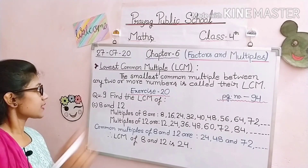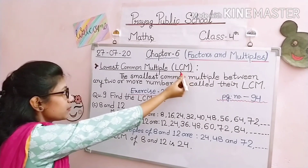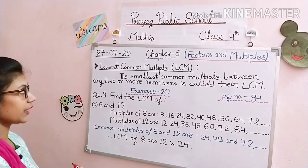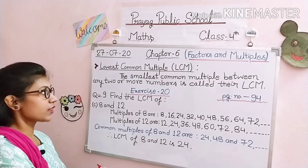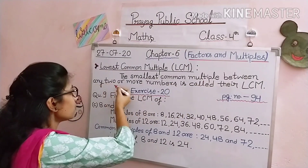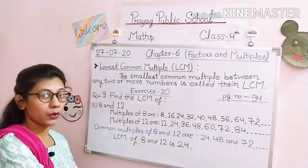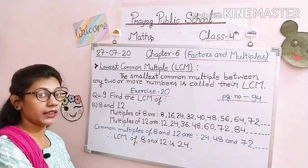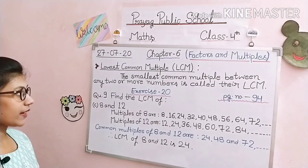Our first topic for today is Lowest Common Multiple — we call it LCM in short form. We have already learned about multiples and their properties. Today we will find out how to find the smallest multiple that is common between numbers. The definition is: the smallest common multiple between any two or more numbers is called their LCM. We first find the multiples, then find the common ones, and from those pick the smallest.